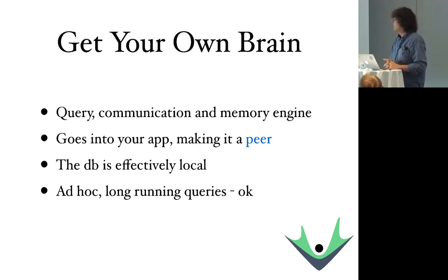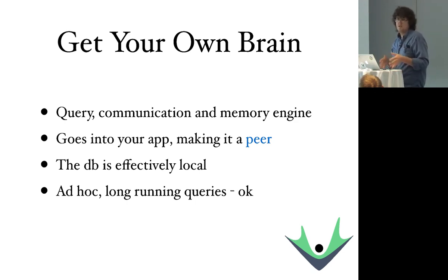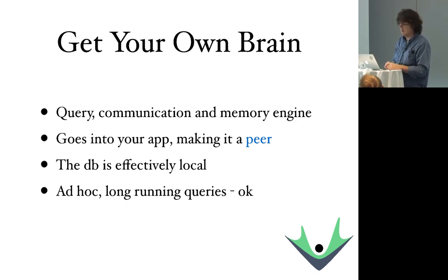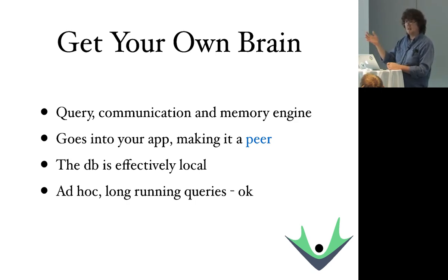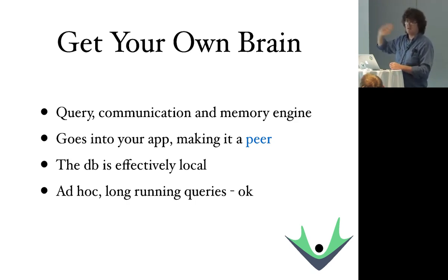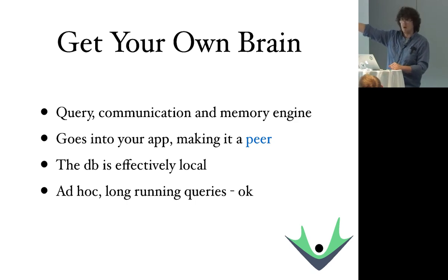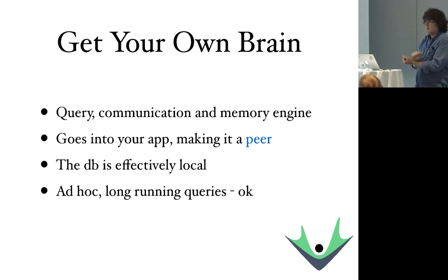You get your own brain — query, communication engine, memory and caching engine — all built into your application servers by including the peer library. The effect to your application is that the database feels like a local resource. This is a very big deal because client-server has invaded the way people think about what applications can do. The conversational aspect and the fact that you think you're tapping into a shared resource that's potentially getting overloaded really compromises what you think your application is allowed to do.